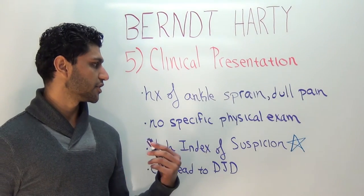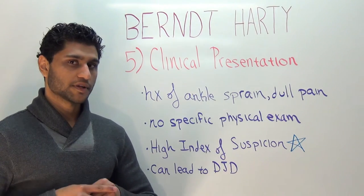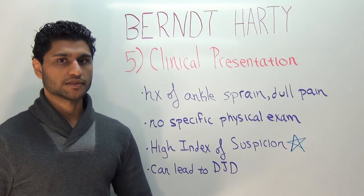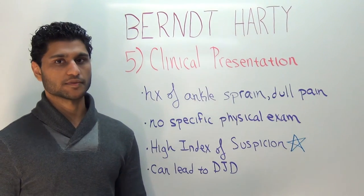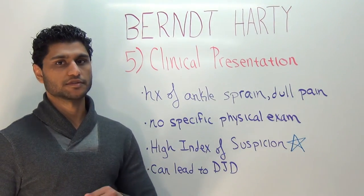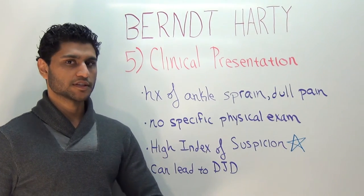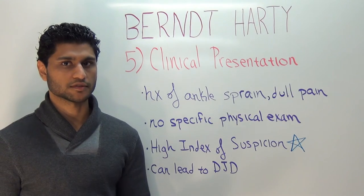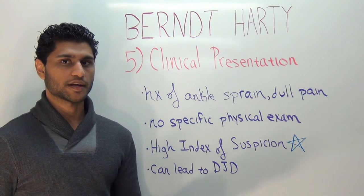Patients will often present with a history of an inversion-type ankle sprain that has not healed after 6–8 weeks of treatment. Most patients describe a deep dull ache in the ankle joint that is worse with weight-bearing. What makes the physical exam difficult is that there is no specific maneuver to rule in or rule out an OCD — unlike a Mulder's test for neuroma, a single heel raise for PTTD, or a Thompson test for Achilles rupture. The key to diagnosis is maintaining a high index of suspicion, always keeping OCD as a possible differential when a patient has ankle pain. Additionally, because these are injuries to the articular surface, they can lead to post-traumatic arthritis over time.